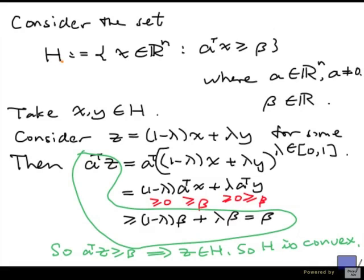As you can see, H is the set of points in R^n satisfying a single inequality. Such a set has a special name, and it's called a half-space. So a half-space is a set of points in R^n satisfying a single linear inequality where the coefficients of x are not all zero.